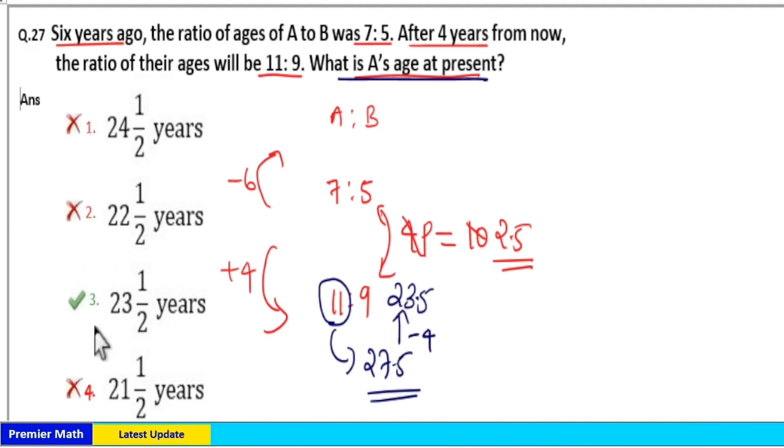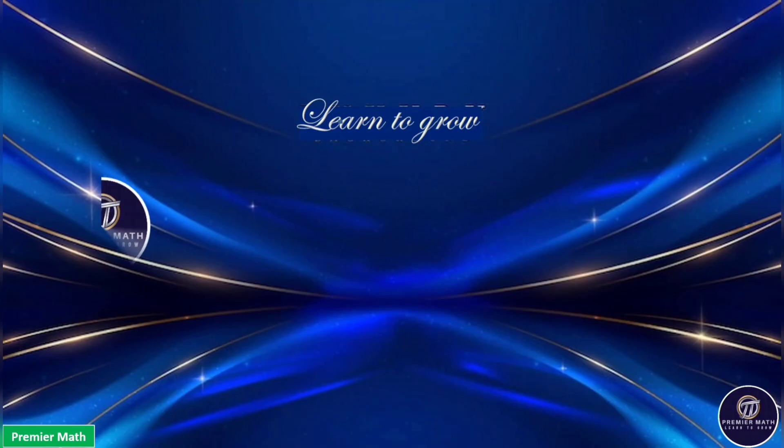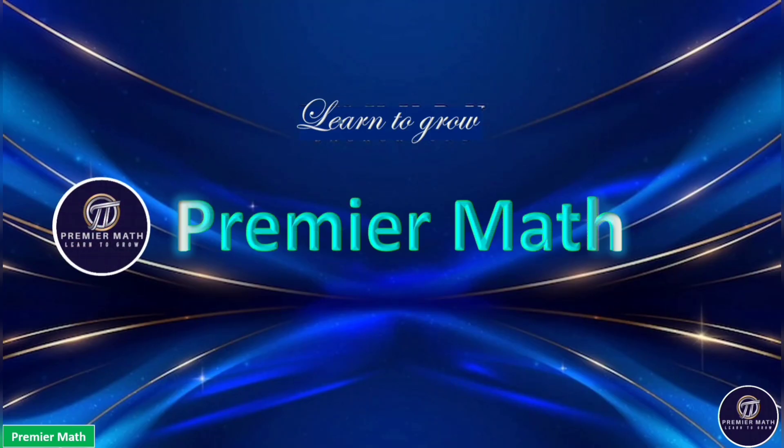Present age means before 4 years. After 4 years from now, age is 27.5. Then present age is equal to 23.5.